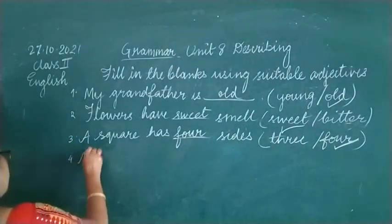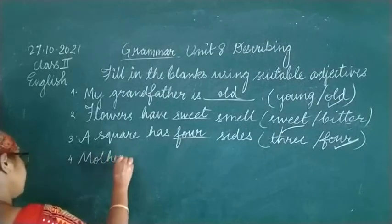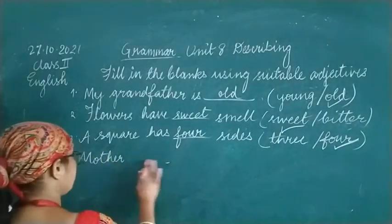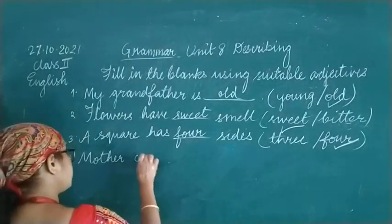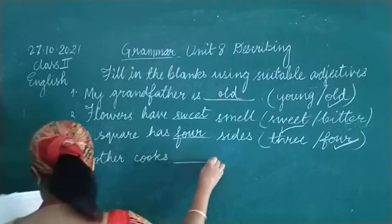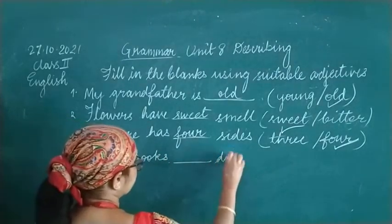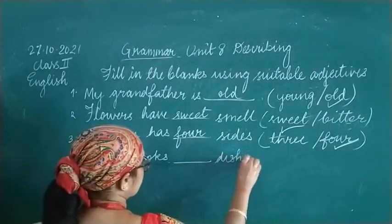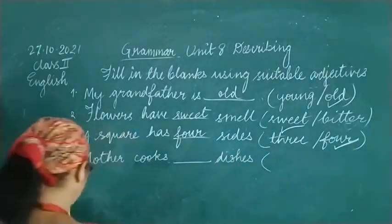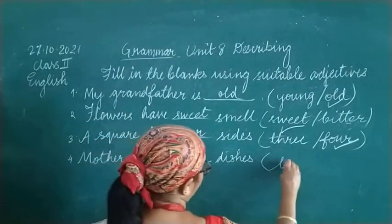Number 4: Mother cooks blank dishes. The options are tasty or long. The answer is tasty — Mother cooks tasty dishes.